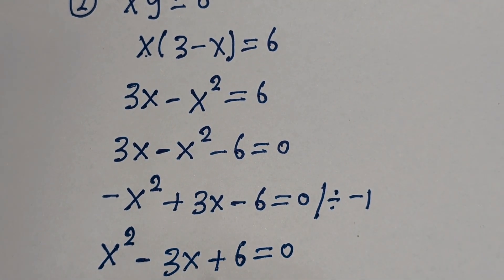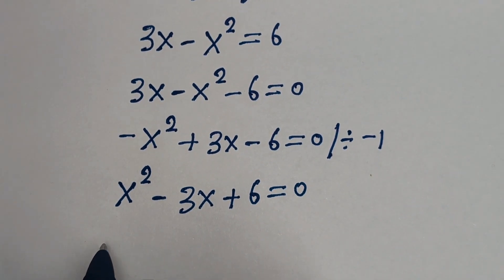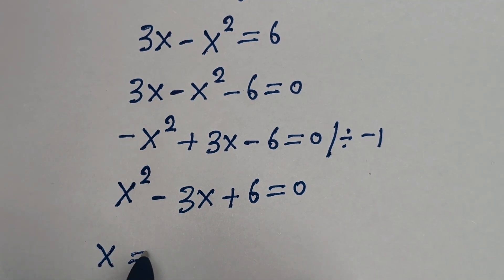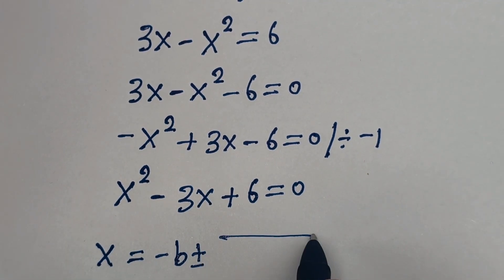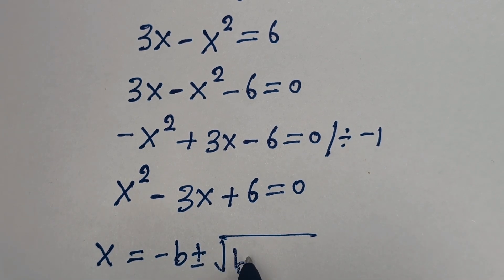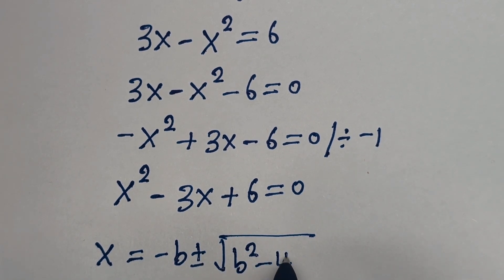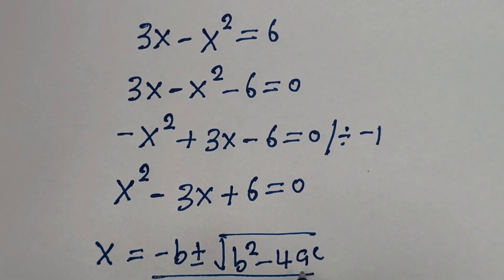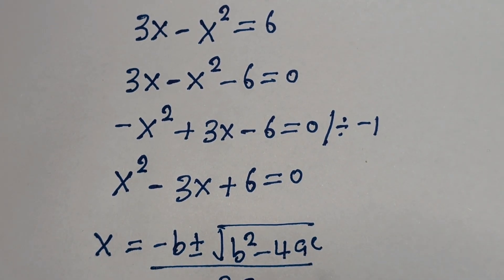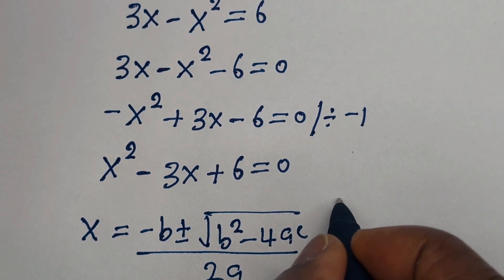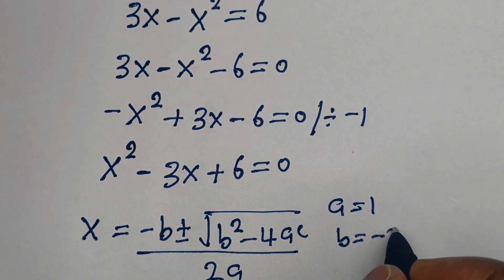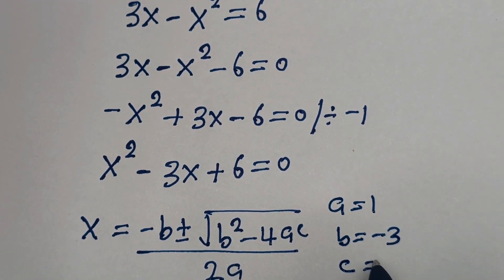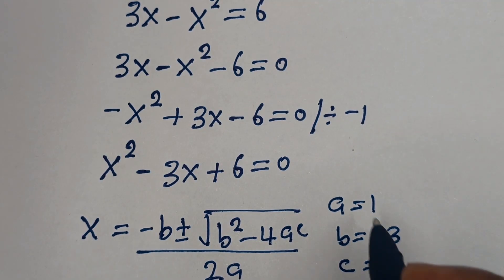This is a quadratic equation. Let us solve this using the quadratic general formula: S is equal to minus B plus or minus square root of B squared minus 4AC, all over 2A. Here, A is equal to 1, B is equal to minus 3, and C is equal to 6.